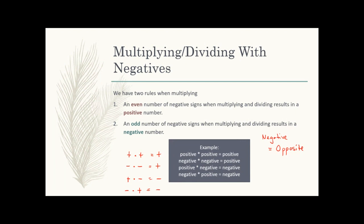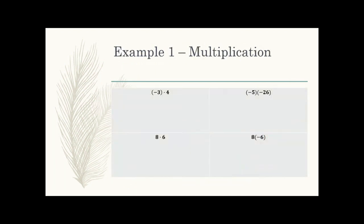Starting with some basic examples. First, negative three times four: it's in parentheses indicating it's a negative. We have one negative sign, so our answer is negative. Three times four is 12, so that gives us negative 12. For negative five times negative 26: we have two negative signs — that's even, so they cancel out and the answer is positive. I do 5 times 26 on my calculator, which comes out to 130.